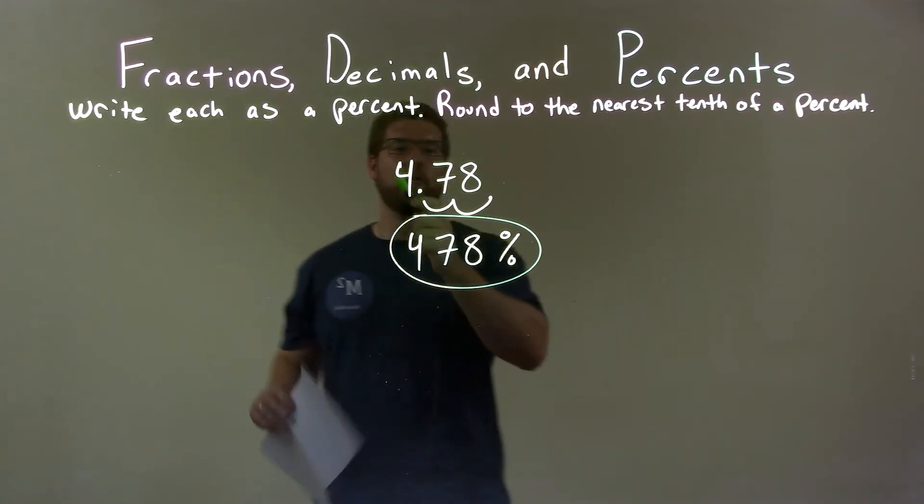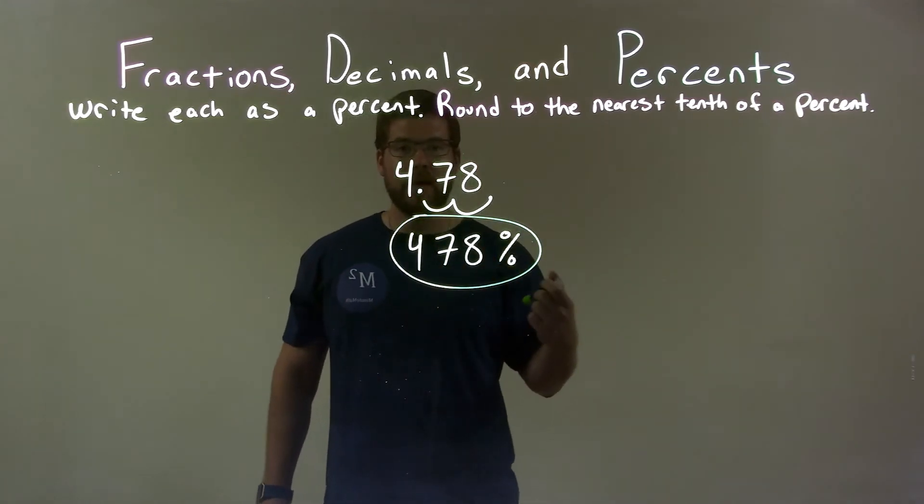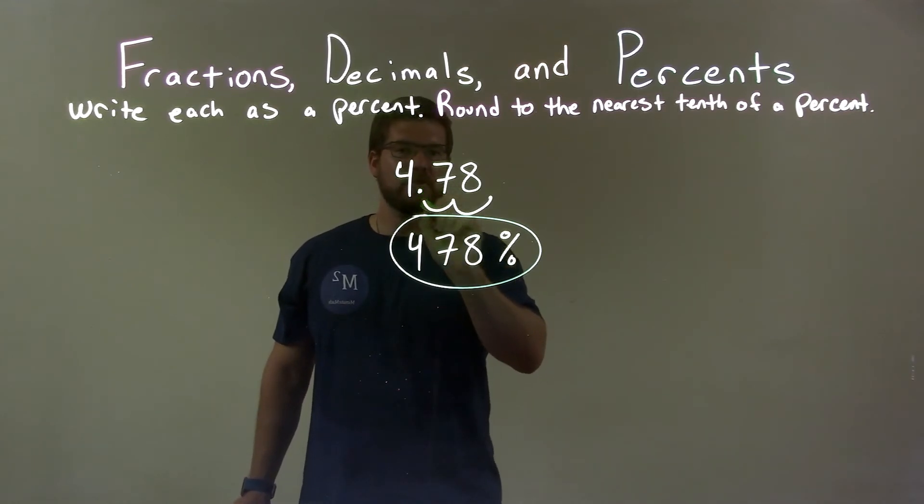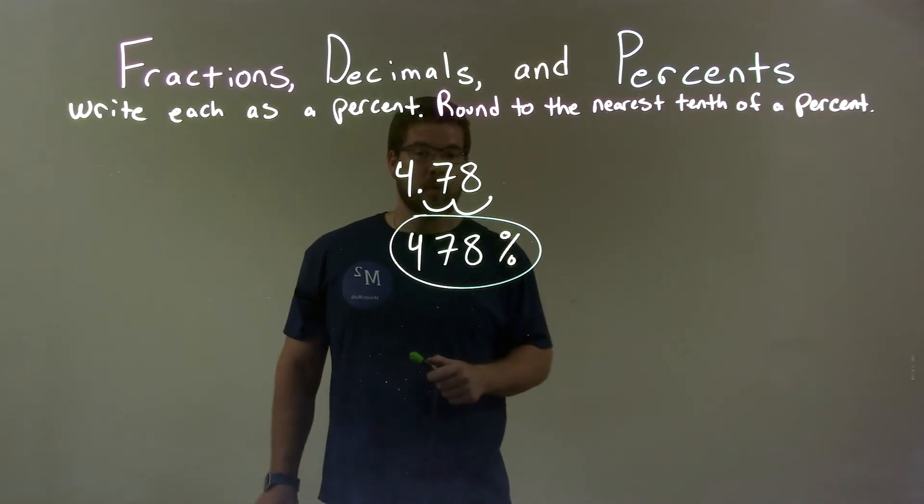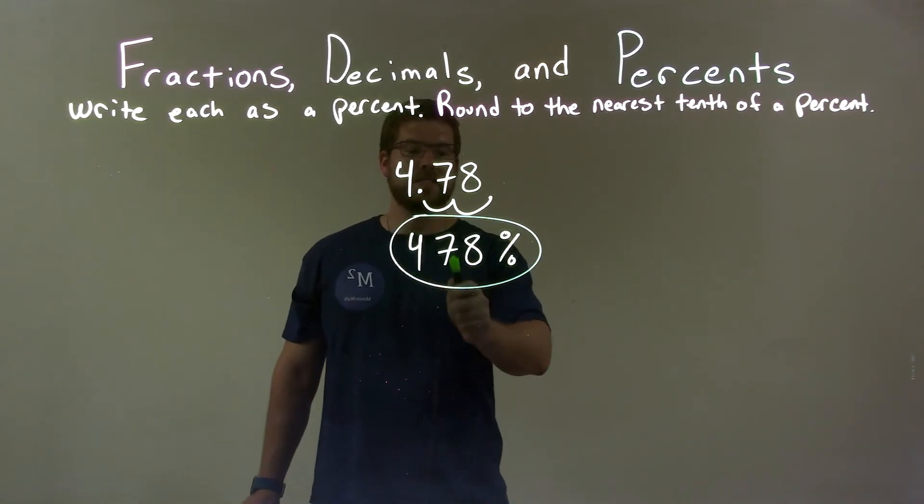So, quick recap. We're given 4.78 and we have to write that as a percent. Move the decimal spot two spots to the right and so 4.78 becomes 478 percent. Our final answer, 478 percent.